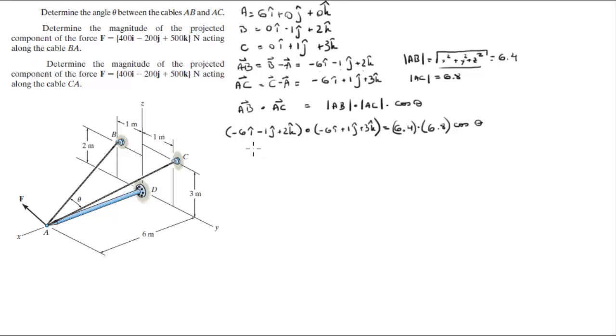So negative 6 times negative 6 is positive 36. Negative 1 times positive 1 is negative 1. Positive 2 times positive 3 is positive 6. So this is equal to 6.4 times 6.8 times the cosine of the angle between them. This comes out to be 41 equals 6.4 times 6.8 times the cosine of the angle between them. And the angle when you solve by dividing 41 by 6.4 divided by 6.8 and doing the cosine inverse, you're going to get that the angle is equal to 19.6 degrees.